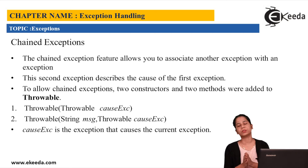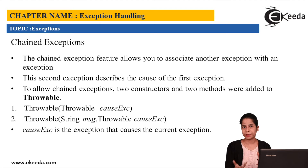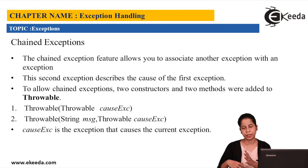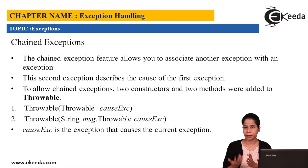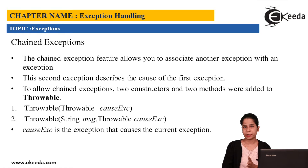Now don't get confused between current cause and the main cause. Current cause is nothing but, in my example, the arithmetic exception because this is the one which has been thrown to me. Then the actual cause, which is the main reason of the arithmetic exception, is nothing but your IO exception. So basically, you have to handle your current exception as well as your actual cause of the exception.